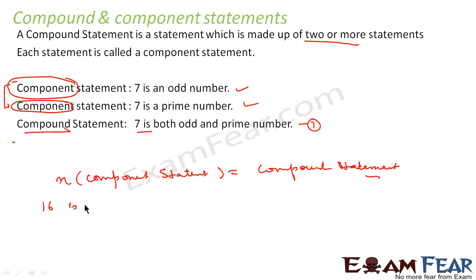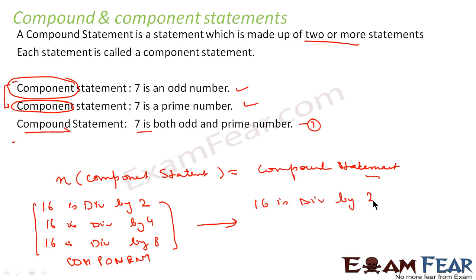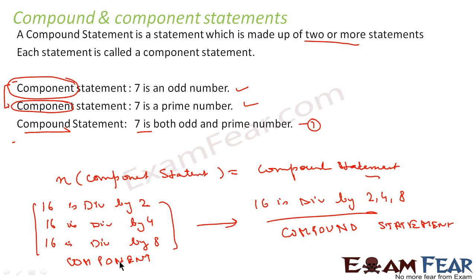Let's take one more example. Suppose the first statement is '16 is divisible by 2,' the second statement is '16 is divisible by 4,' and the third statement is '16 is divisible by 8.' We have three statements here and all three are component statements, because they are all individual statements. You combine all these and write '16 is divisible by 2, 4, and 8' — this is nothing but a compound statement, because we combined all component statements. One compound statement should have minimum two statements, and in this case we have three.